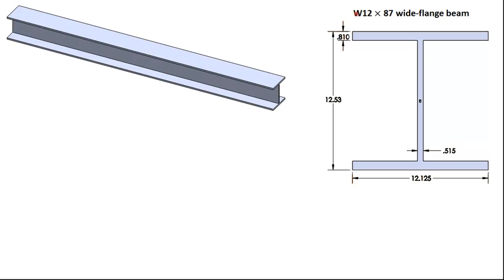Let's calculate the moment of inertia for a wide flange beam. In this case I've chosen a beam that's known as a W12 by 87. The W just stands for wide flange.